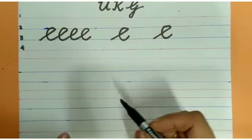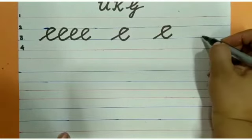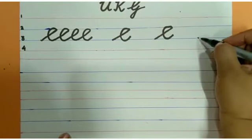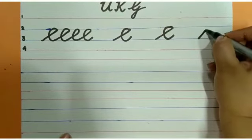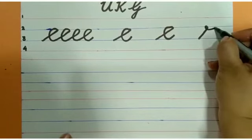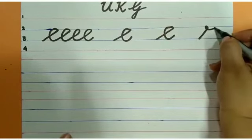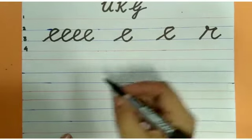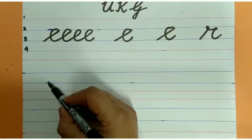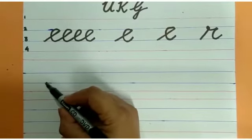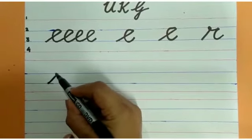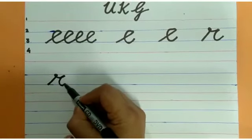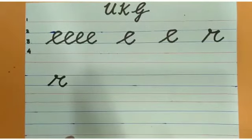Now for next letter that is letter R. Same as that we will start from the bottom blue line, we will go up again and go up slanting, make a loop and make a C. Let us start again from the bottom blue line. Go up slanting, make a loop, go ahead and make a curve like C and R will be formed.